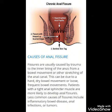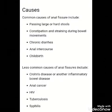Fissures are usually caused by trauma to the inner lining of the anus from a bowel movement or other stretching of the anal canal. This can be due to a hard dry bowel movement or loose frequent bowel movements. Patients with a tight anal sphincter muscle are more likely to develop anal fissures.